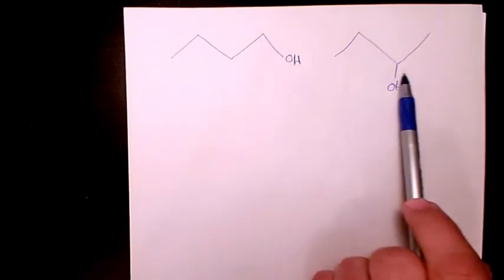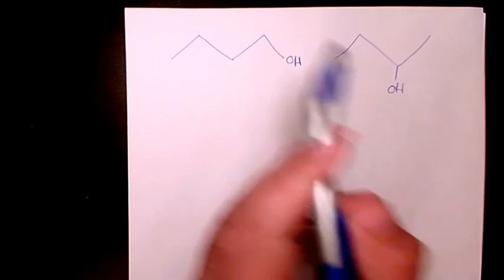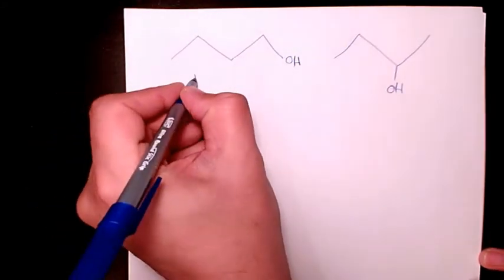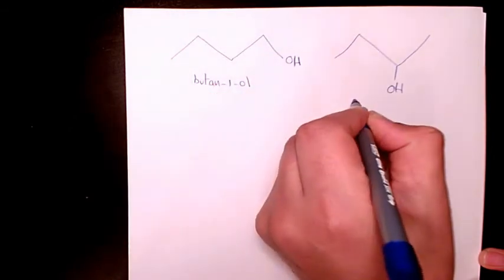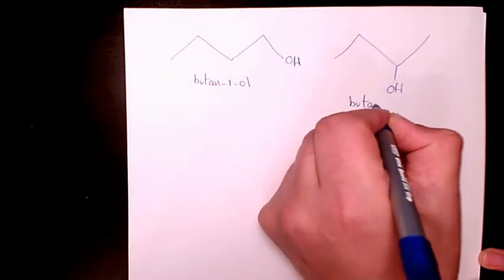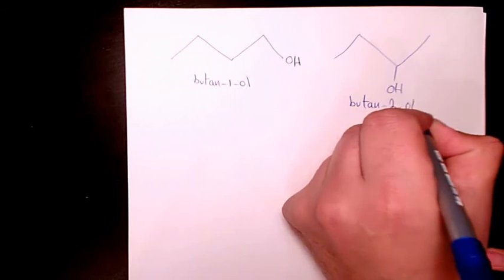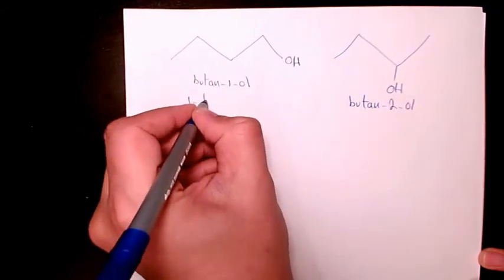In this case it connects to the first one, in this case connects to the second one. So the first one is going to be called Butan-1-ol and here this one is called Butan-2-ol, or this one is called 1-butanol and this one is called 2-butanol.